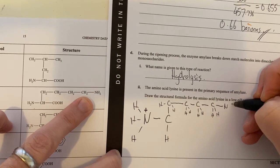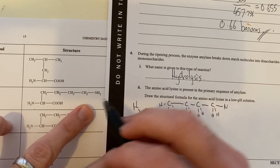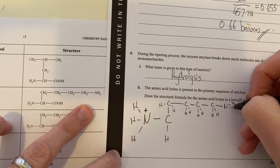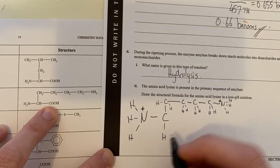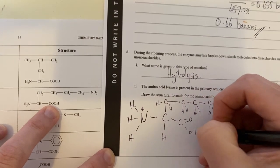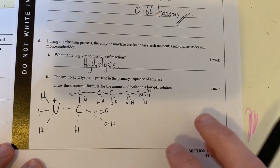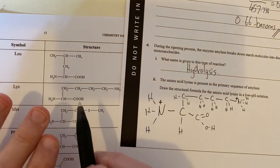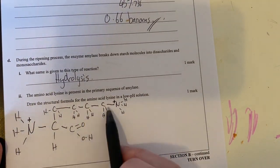Two more Hs, then bonded to an N. This is another amino group, so this is going to be protonated as well. Three hydrogens on that with a positive charge, and then my carboxyl group here will remain protonated as well. That will be my structure of lysine at low pH. Simply copied from my data booklet, and then making sure that at low pH, both these amino groups will be protonated. That is the answer to part D2.